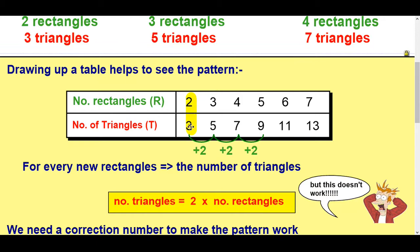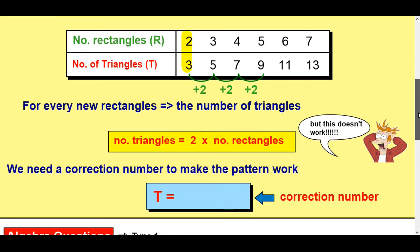Because two times two is four, three times two is six, and four times two is eight, and five times two is ten. It's not getting me this bottom number. So again, what I need is a correction factor.